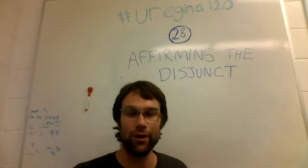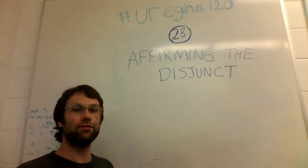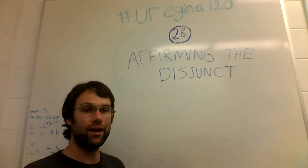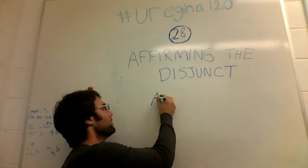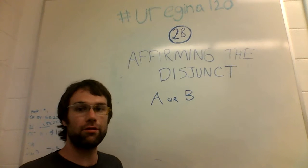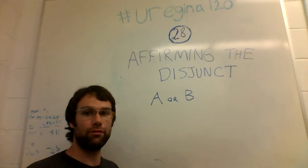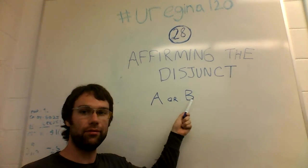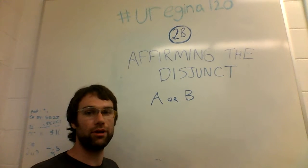How this is going to work, like other previous logical fallacies, is there's going to be a form of argument which starts with a statement of the form A or B, where A and B are two things that can be true.